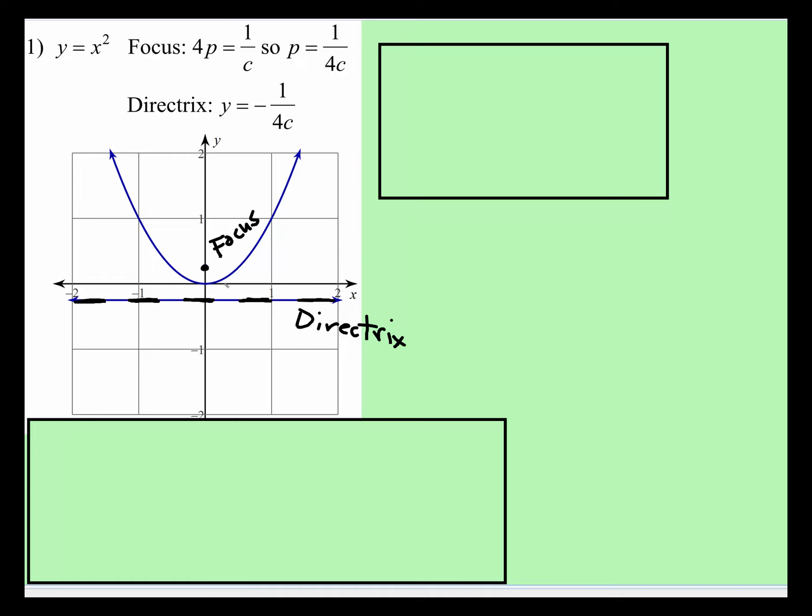This will be just to show you how to find those two things. So if you have just a basic parabola that starts at the origin, the vertex is at the origin right there, so we know that the vertex is going to be (0, 0).